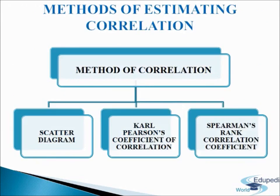Now we come to methods of estimating correlation. There are various methods for estimating correlation between two variables. The main methods used to measure the correlation are the scatter diagram method, Karl Pearson's coefficient of correlation method, and Spearman's rank correlation coefficient method. These methods will be discussed one by one in the coming slides.